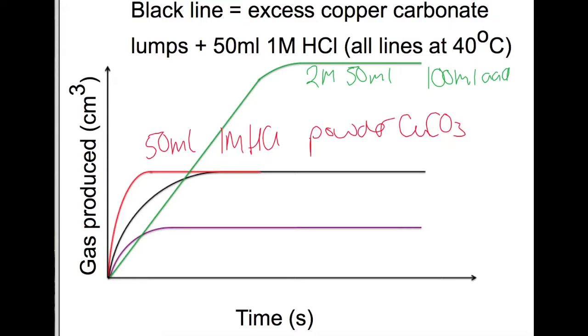Finally looking at the purple line. So the purple line is down here and you can see that this is half the gas produced from the black line. So for this one we will have used either a lower concentration of acid or a lower volume of the original acid.